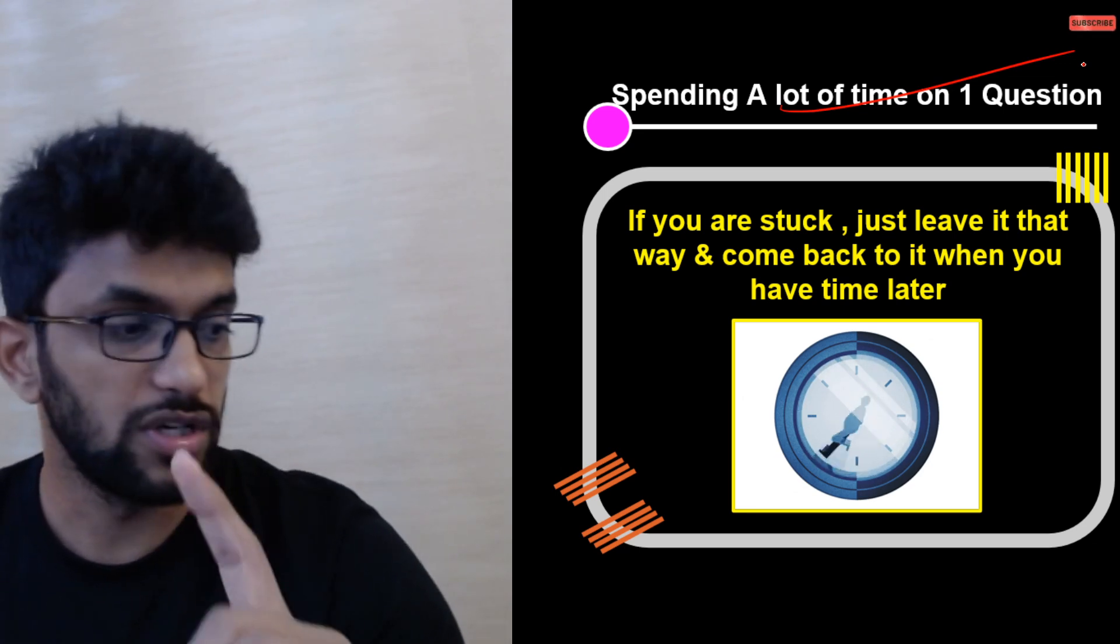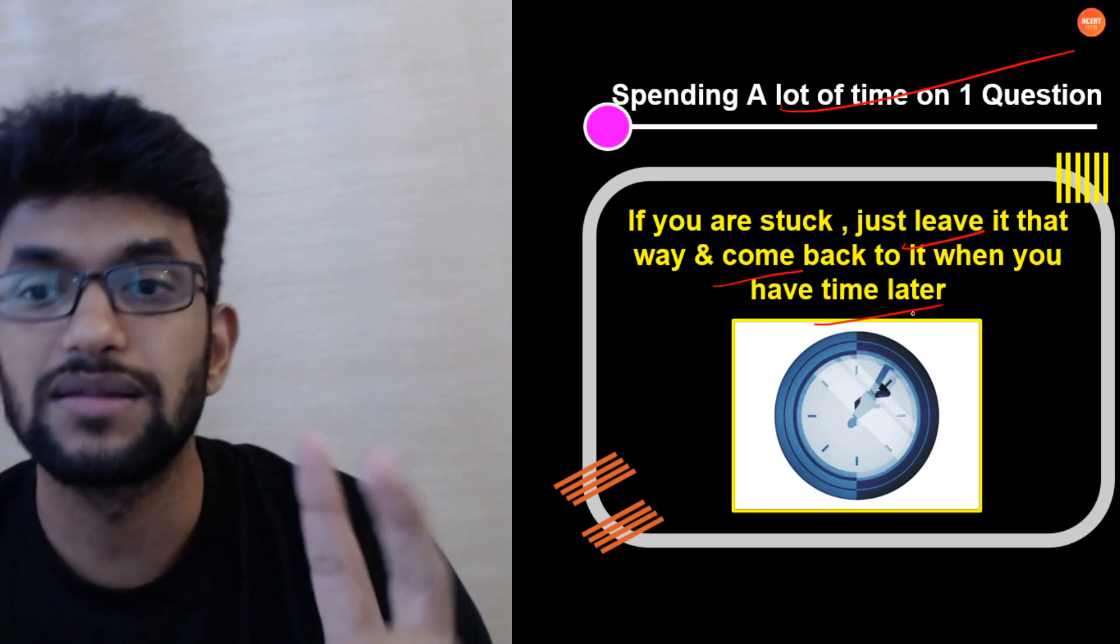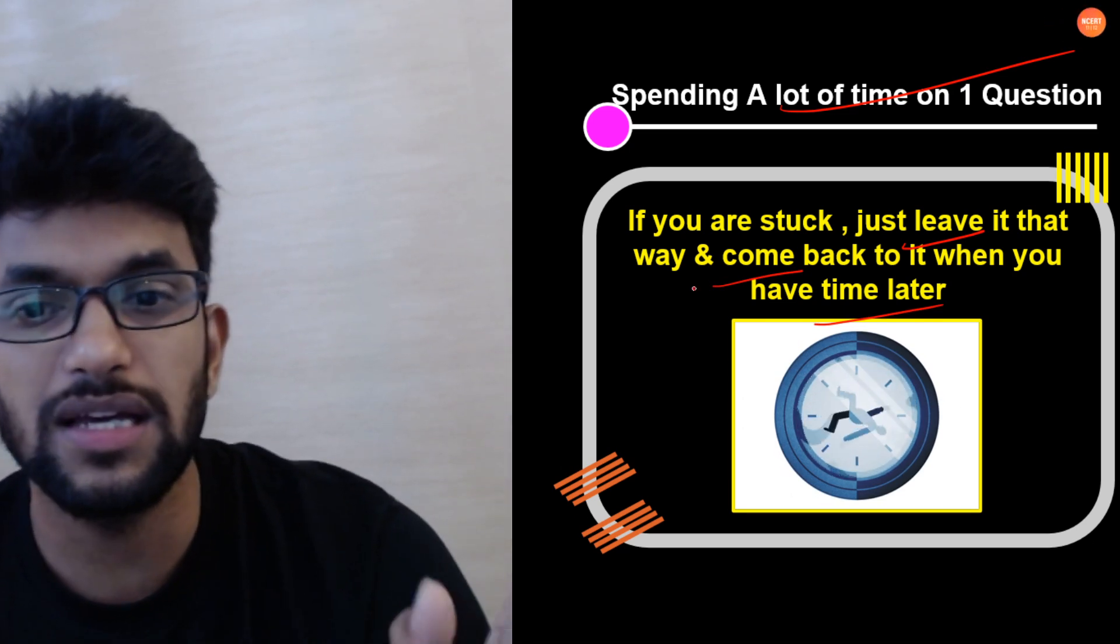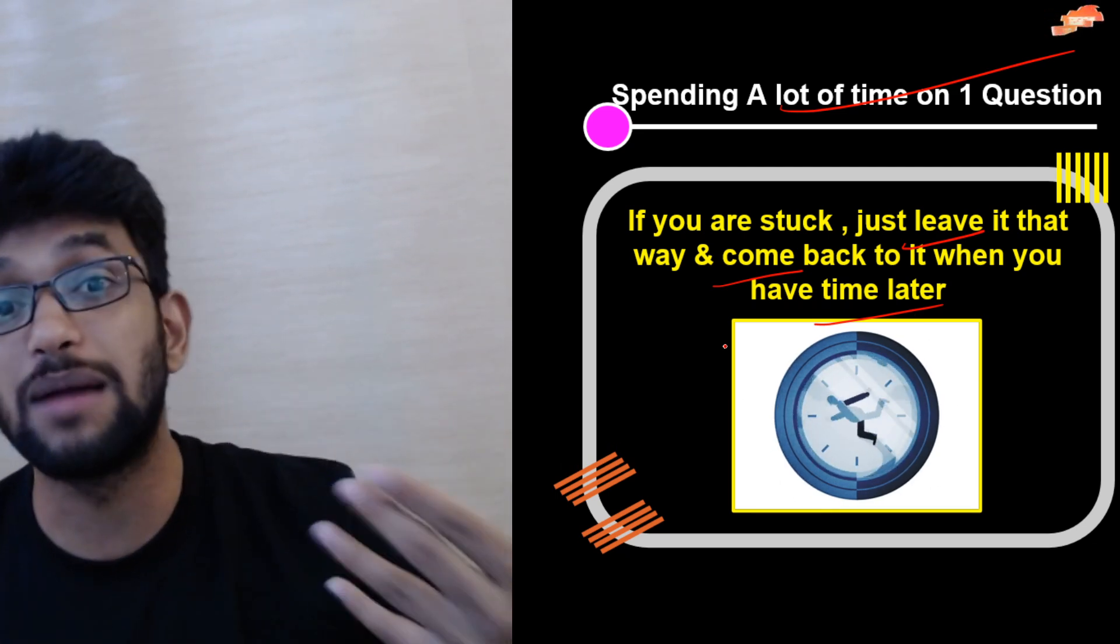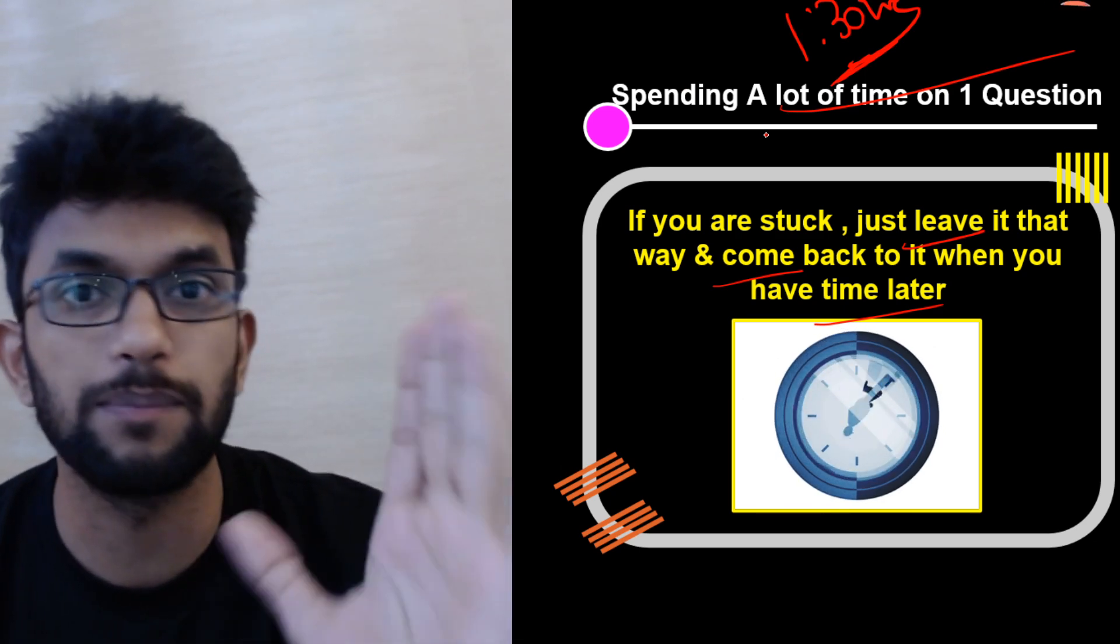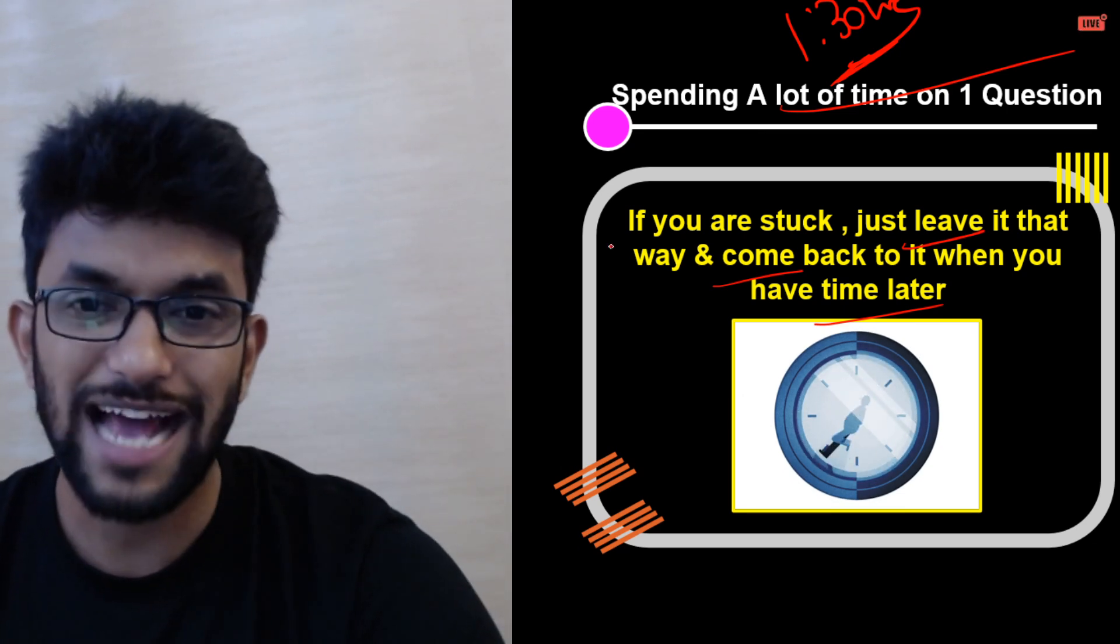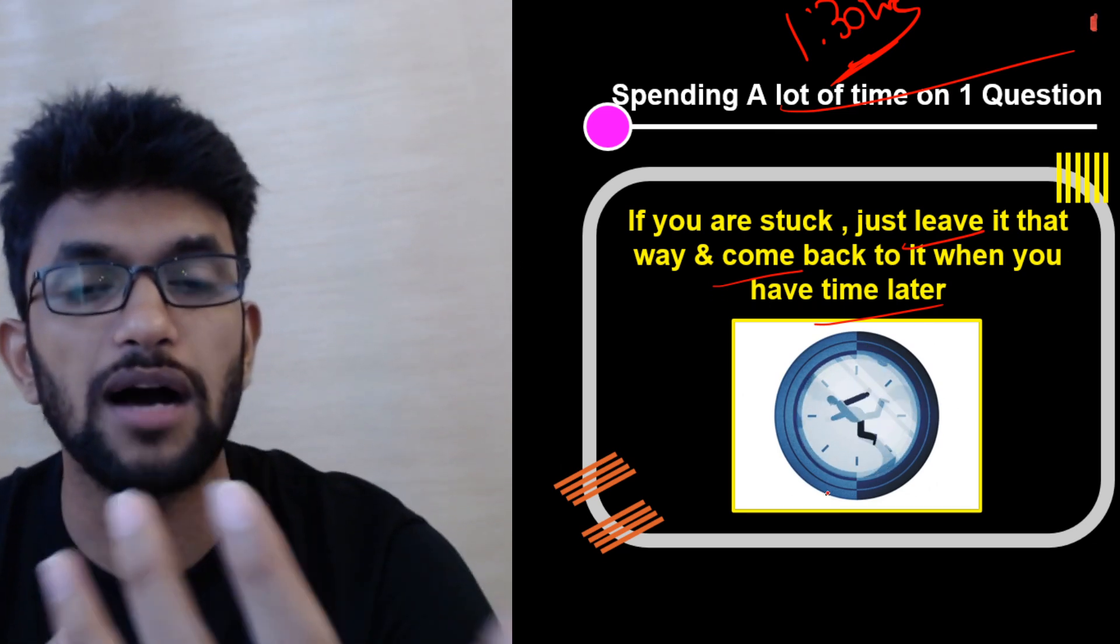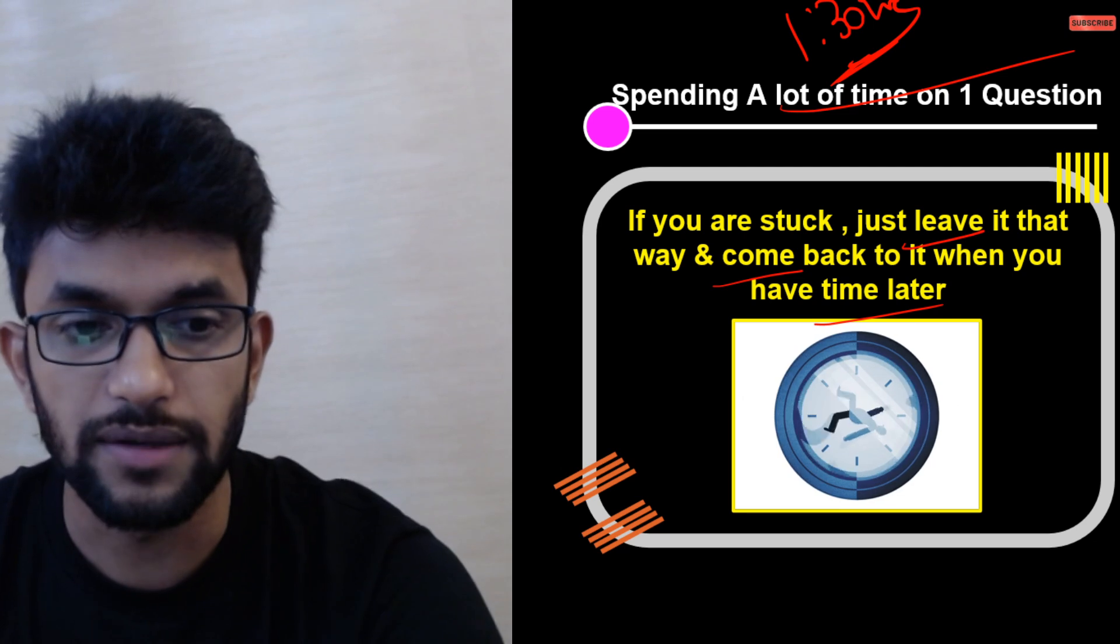Spending a lot of time on one question - this is very important. Kids do this a lot. If you are stuck, just leave it and come back when you have time. In maths especially, you get stuck on one question and keep working on it. Sample paper solving helps with this. When you solve sample papers, you understand how to attempt the exam properly. Please attempt one and a half hour sample papers. Take your friend's school pre-board papers, take papers from your tuition, interchange and practice as many questions as possible. If you think your paper is difficult, send it to me at amrit.raj@vedantu.com. I will solve it and we'll do it on YouTube.